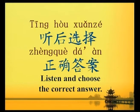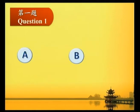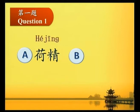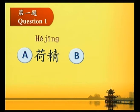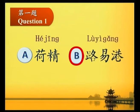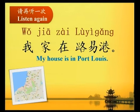第一題 (Question 1): 我家在哪兒? (Where is my house?) A. 核金。B. 路易港。答案是 B. 路易港。Please listen again: 我家在路易港。My house is in Port Louis.